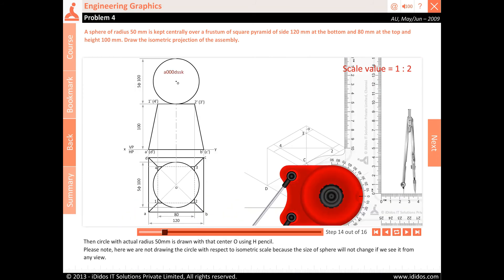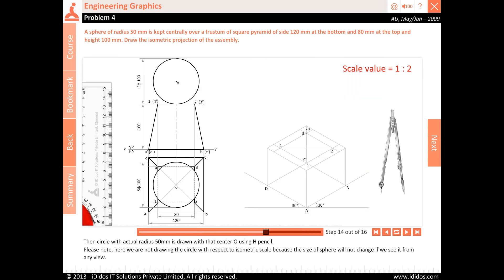Then circle with actual radius 50 mm is drawn with that center O using H pencil. Please note here we are not drawing the circle with respect to isometric scale because the size of sphere will not change if we see it from any view.